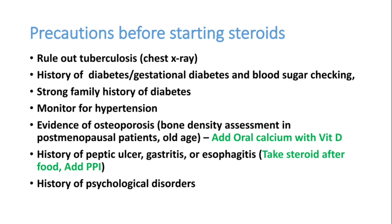Before starting steroids in any patient, we have to take some precautions. At least take a chest X-ray and rule out infections like tuberculosis. Patients should not have diabetes, and when you start long-standing steroids, the patient can develop diabetes — these patients must be followed up. Patients with a family history of diabetes should also be monitored. This drug can produce water and salt retention, so some patients can develop hypertension. Osteoporosis is very common in patients on long-standing steroids, so add calcium and vitamin D whenever possible. Many patients on steroids will develop severe gastritis, so advise proton pump inhibitors. Some patients can have psychological disorders — called steroid psychosis — a very rare complication.